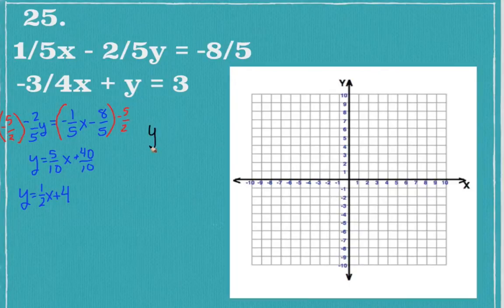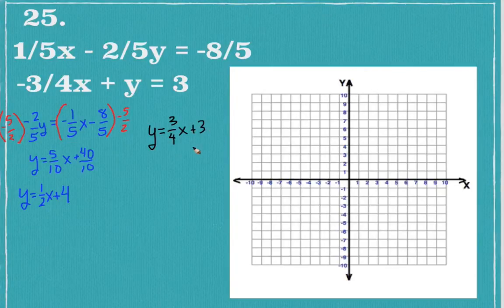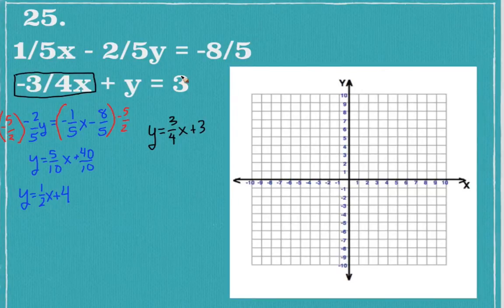For the second equation, I move the negative three-fourths x term to the right side, making it positive, and I get y = three-fourths x plus 3.